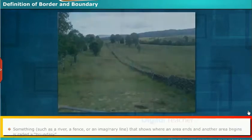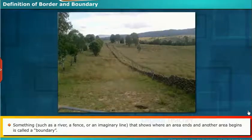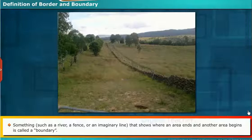A border is a part that forms the outer edge of an object or a material, or a decorative strip around the edge of something such as a fabric. Something such as a river, a fence, or an imaginary line that shows where an area ends and another area begins is called a boundary.